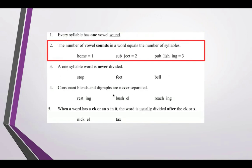Every syllable has one vowel sound, so when you're breaking apart syllables you are finding the vowel sound and breaking amongst it. The number of vowel sounds in a word is the number of syllables. 'Home' has one vowel sound — one syllable. 'Subject' has two vowel sounds — two syllables. 'Publishing' has three syllables — three different vowel sounds.